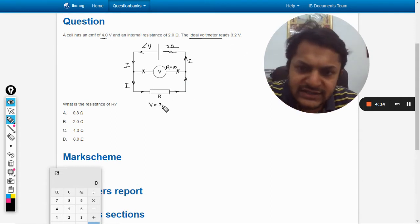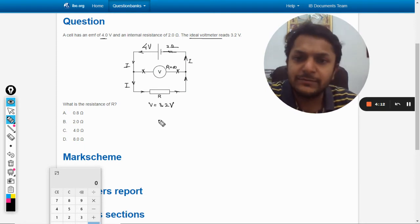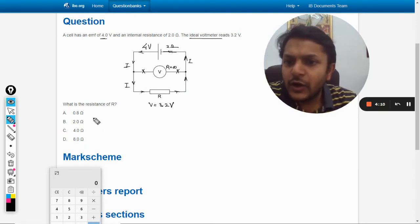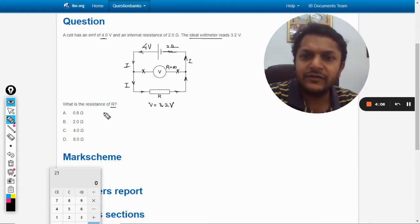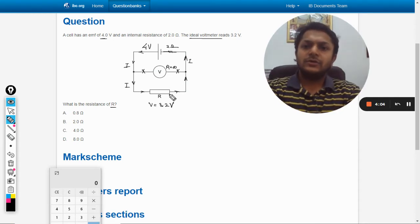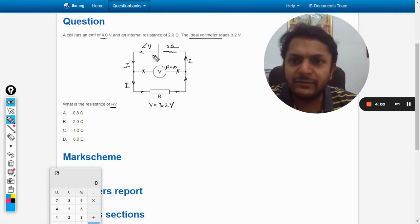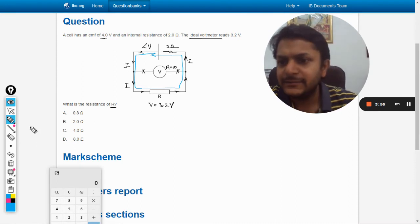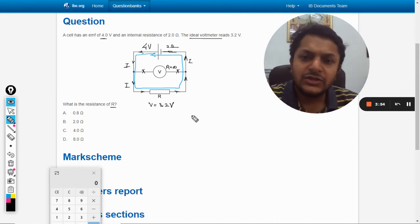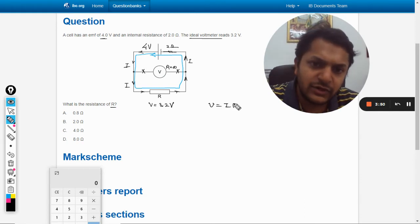Now this reads 3.2 volts, so the voltage across this is given as 3.2 volts. What is the resistor R? We have to find the value of R. So there will be a current I that will be passing through it.